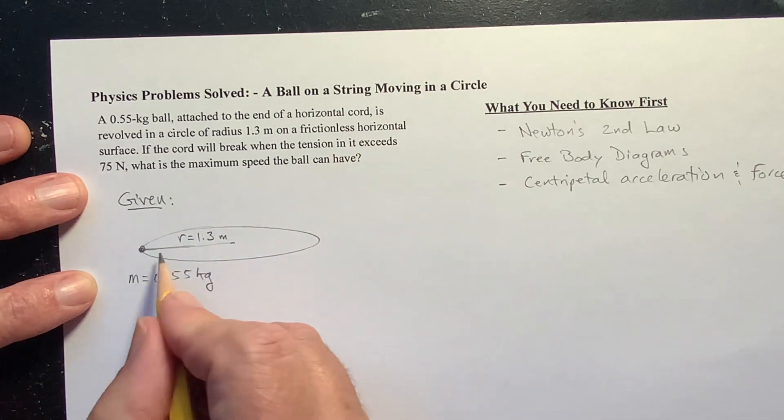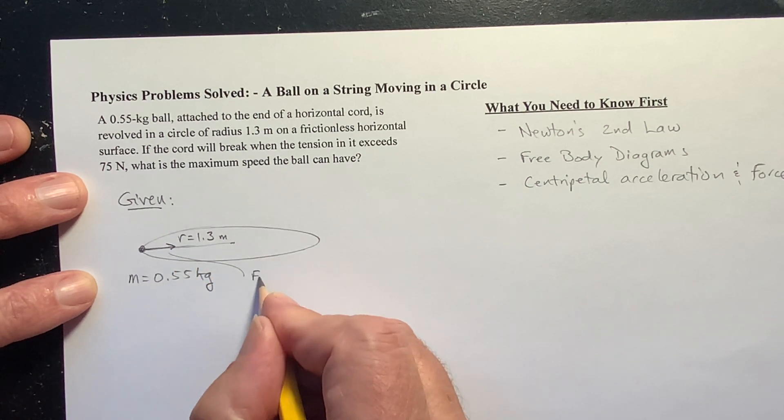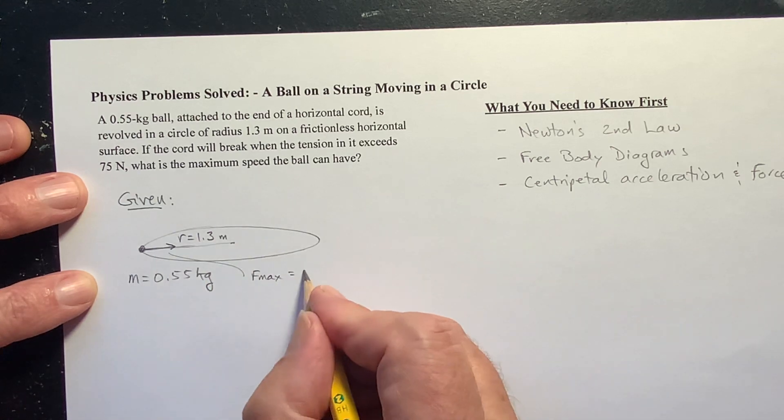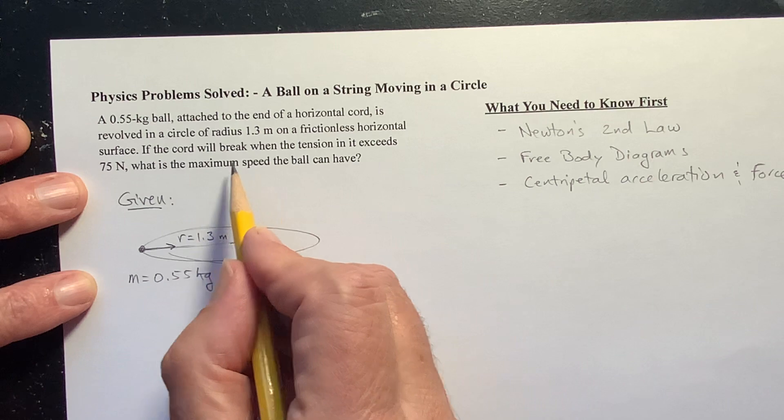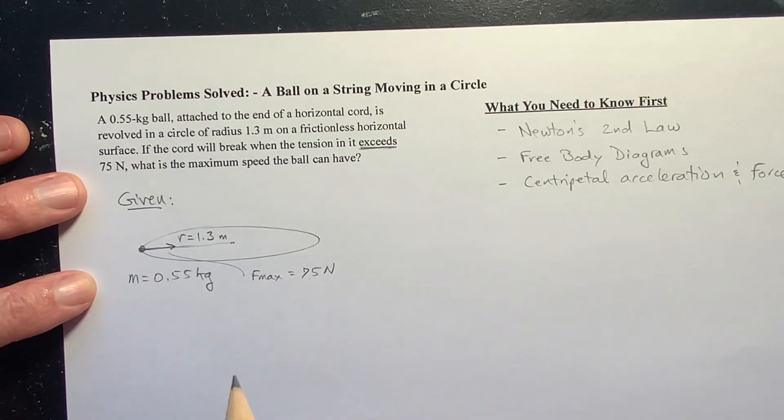Now this is on a cord. The maximum force that this cord can handle is 75 newtons. If we exceed 75 newtons, the cord's going to break. So we're just going to say the maximum is 75 newtons.